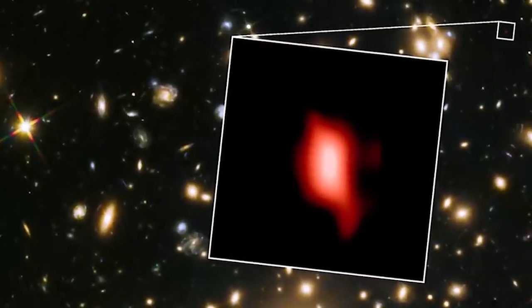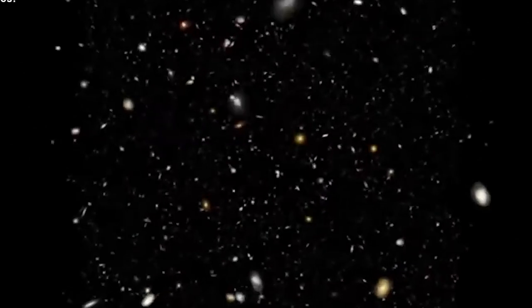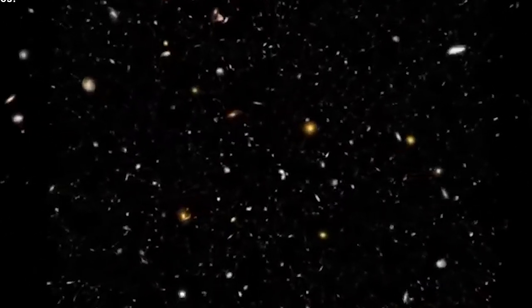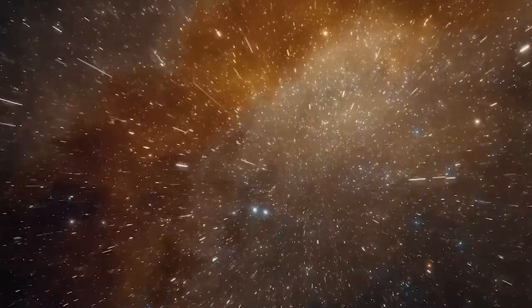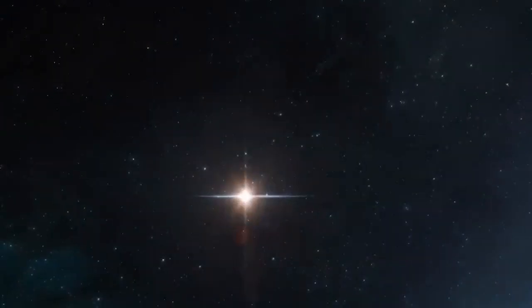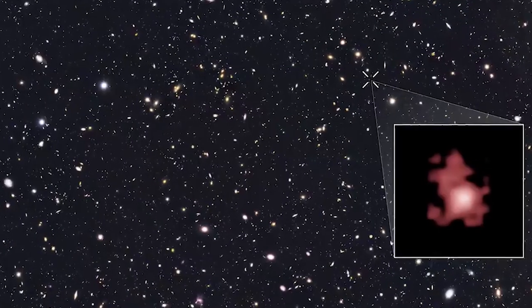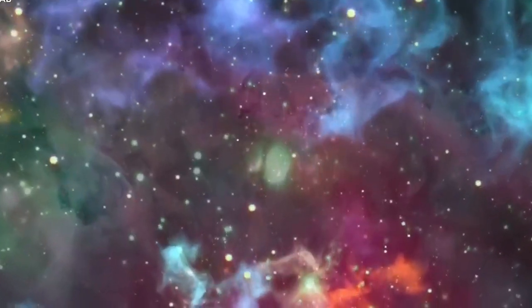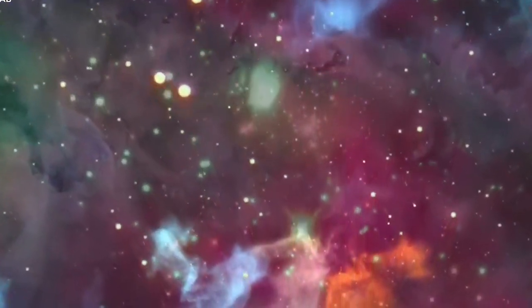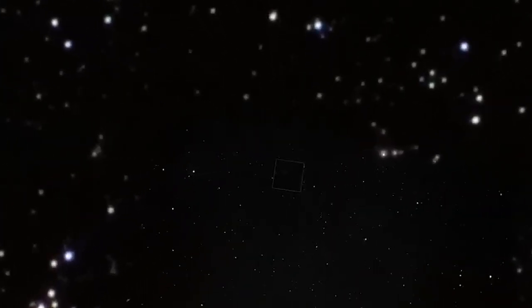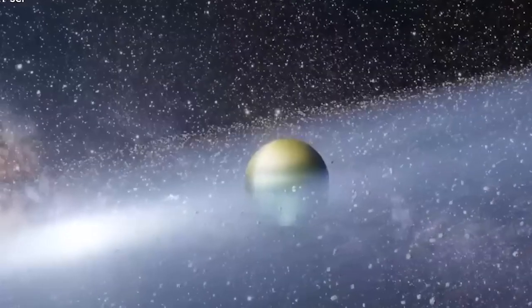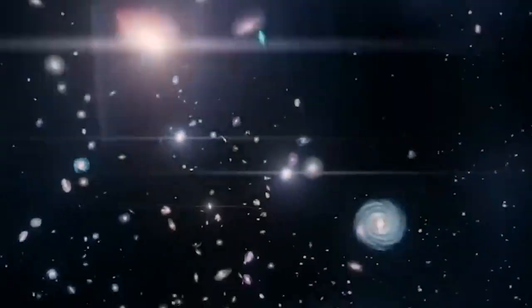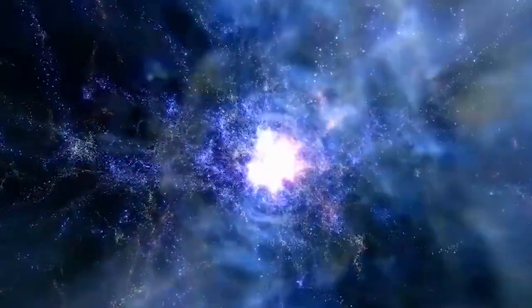Rx J2129-Z95's properties and composition provide valuable information about the nature of early galaxies. Its age, chemical abundances, and stellar populations offer clues about the first generations of stars and their impact on cosmic evolution. By studying this galaxy, scientists can constrain theoretical models and simulations, refining our understanding of the early universe's astrophysics and its connection to cosmological processes.